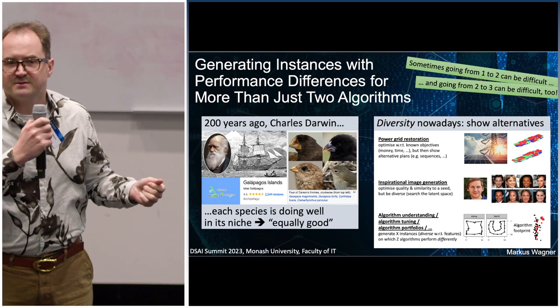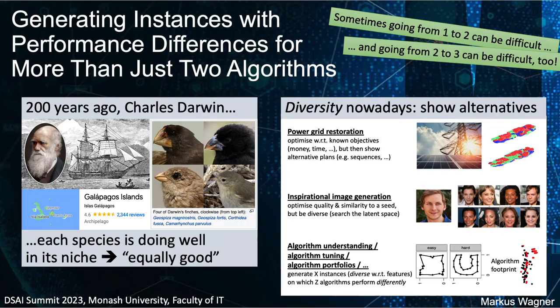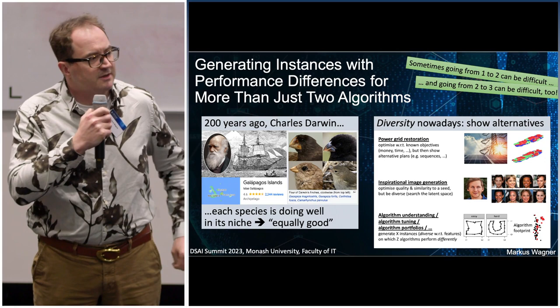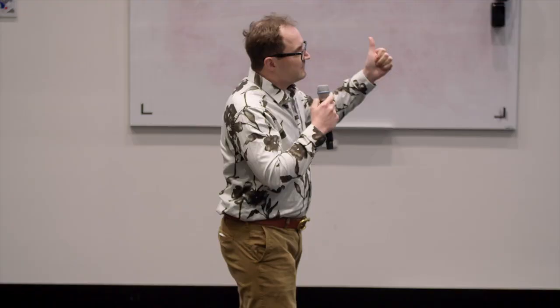With these different plans, a human expert can pick the one they actually want to implement. At an algorithmic level, another illustrative situation is inspirational image generation, where a user comes to you with a solution and says they'd like solutions that are similar in quality but different in a high-dimensional, complex, non-trivial feature space. If you'd like to learn more about how diversity can be helpful in algorithm understanding, algorithm tuning, and algorithm portfolios, please come to my poster.